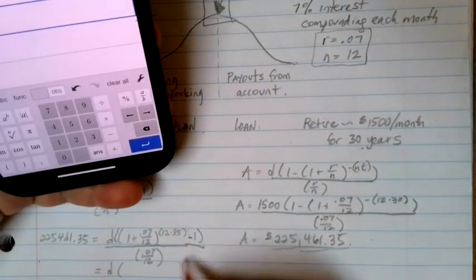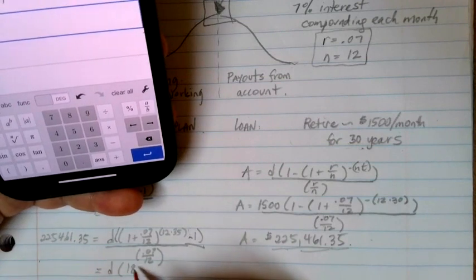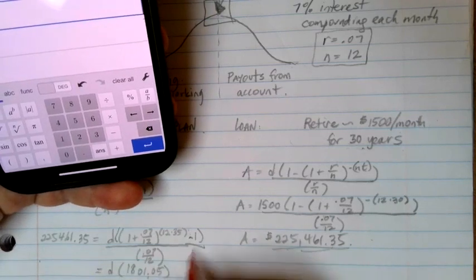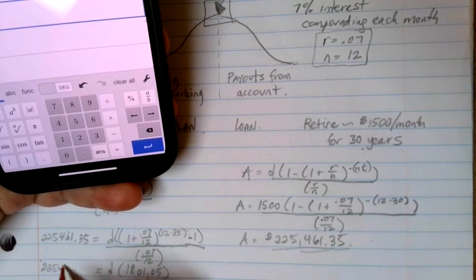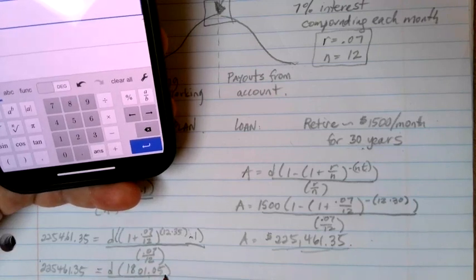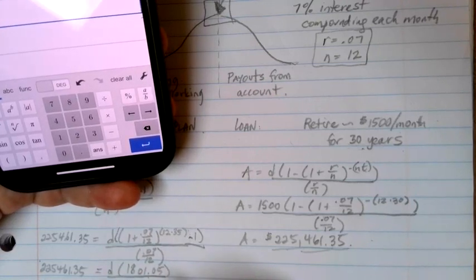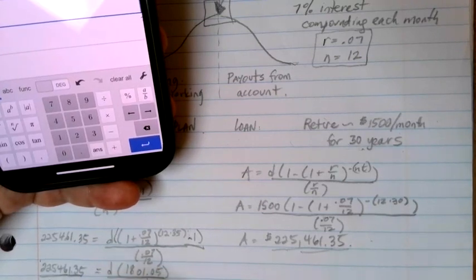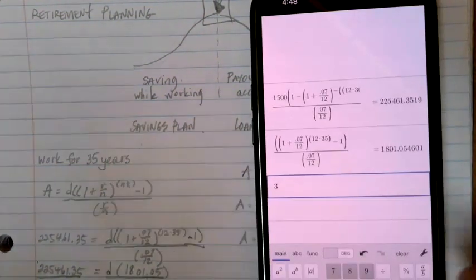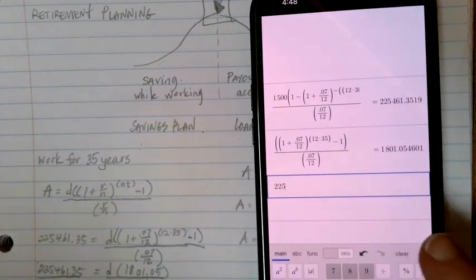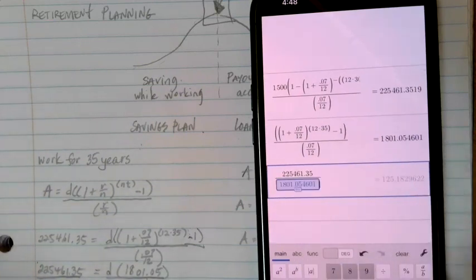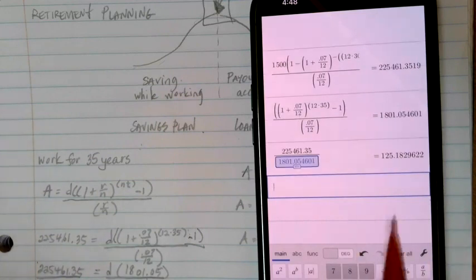And this is basically telling me here, when I simplify all of this, this gives me 1801.05. Remember, this is not our monthly payment. It's just simplifying what was here on the right-hand side of the equation. And I still have 225,461.35 over here that I needed to, I want to end up with at the end. So to get the D by itself, I'm going to divide by this 1801.05. And let's go ahead and do that here on the calculator. We're going to take that 225,461.35. We're going to divide it by that 1801.05, which was, I'll just put my last answer here. And what I come up with is 125.18.